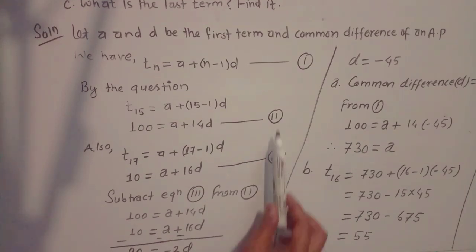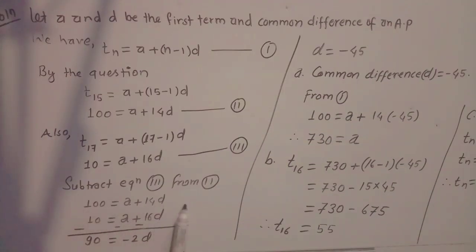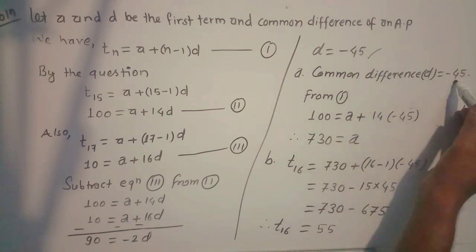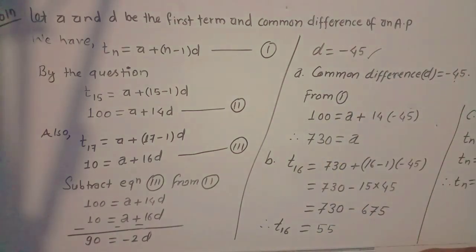Subtract equation 2 from equation 3. 10 minus 100 equals to minus 90. a minus a cancels. 16d minus 14d chai minus 2d. So minus 90 equals to 2d, d equals to minus 90 divided by 2, d equals to minus 45. So the common difference is minus 45. This is the answer for (a).